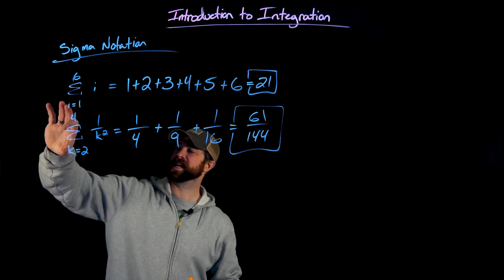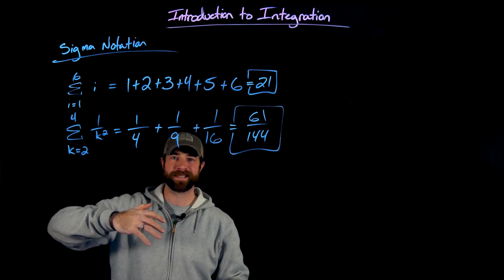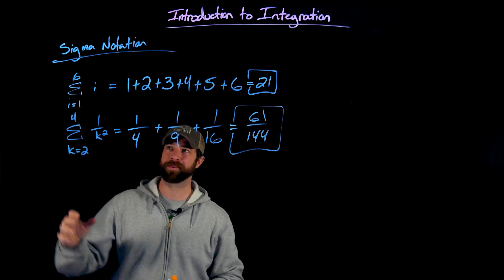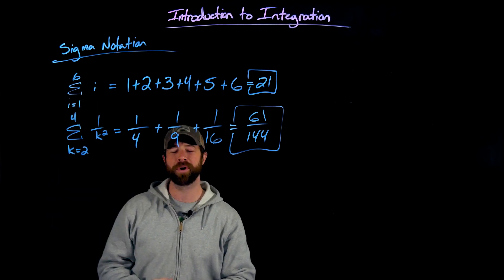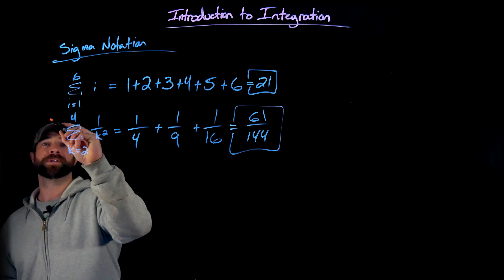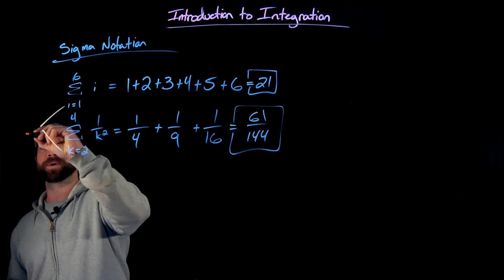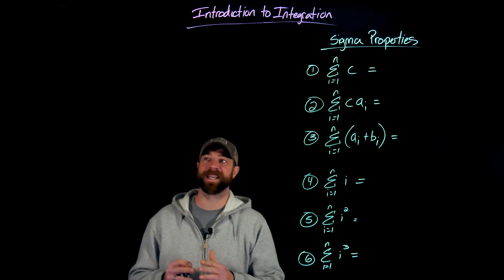Real quick before I move on to some properties of sigma notation, what I want to do is just emphasize these variables right here, the i and the k. It doesn't need to be any specific variable. This is telling you what's going to be described here. It's declaring the variable. We call this though the index of the sigma notation. So I'll call it the variable of iteration or the index.